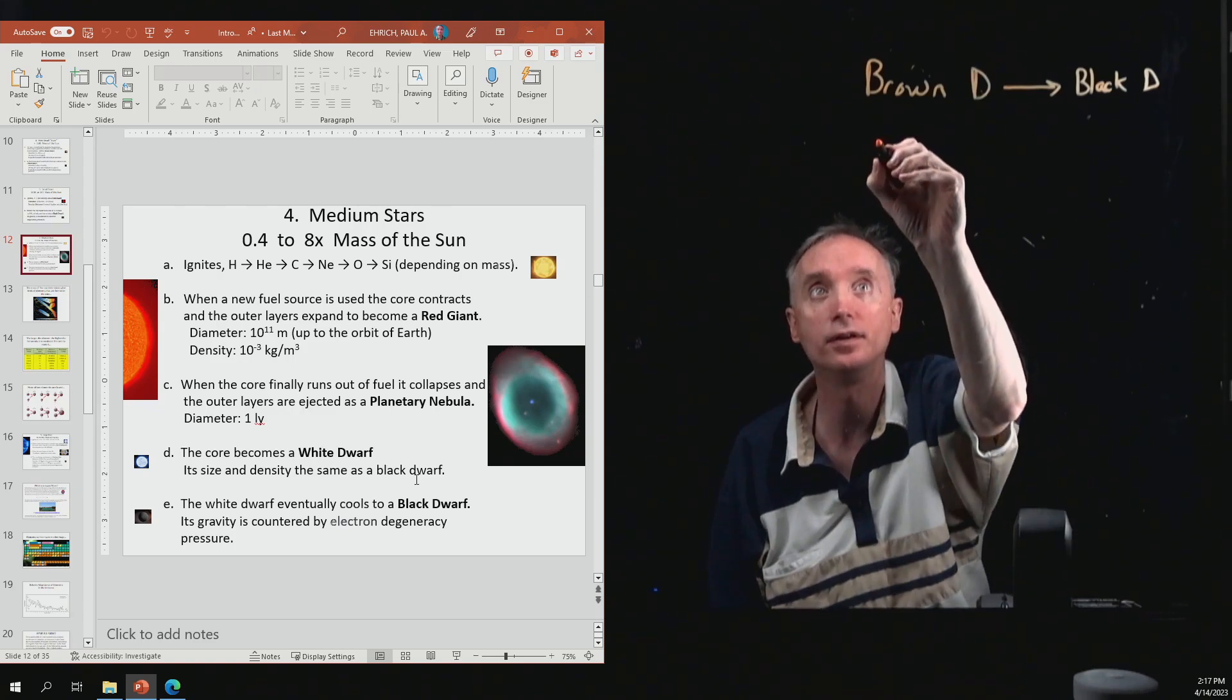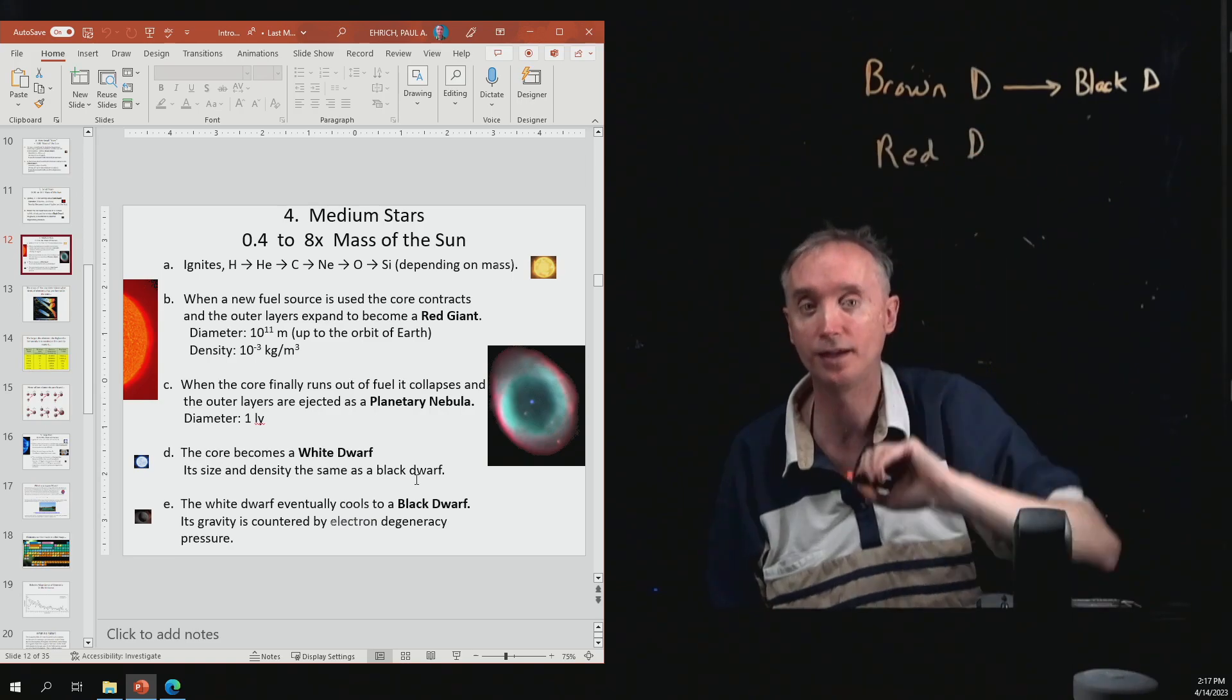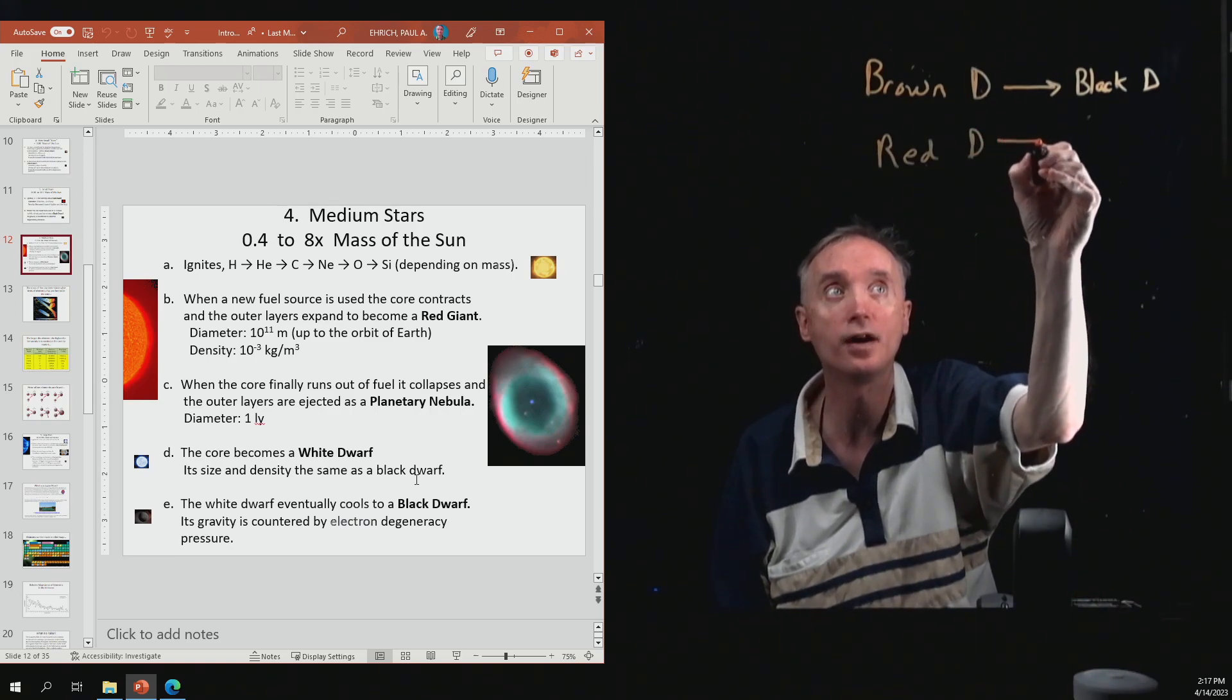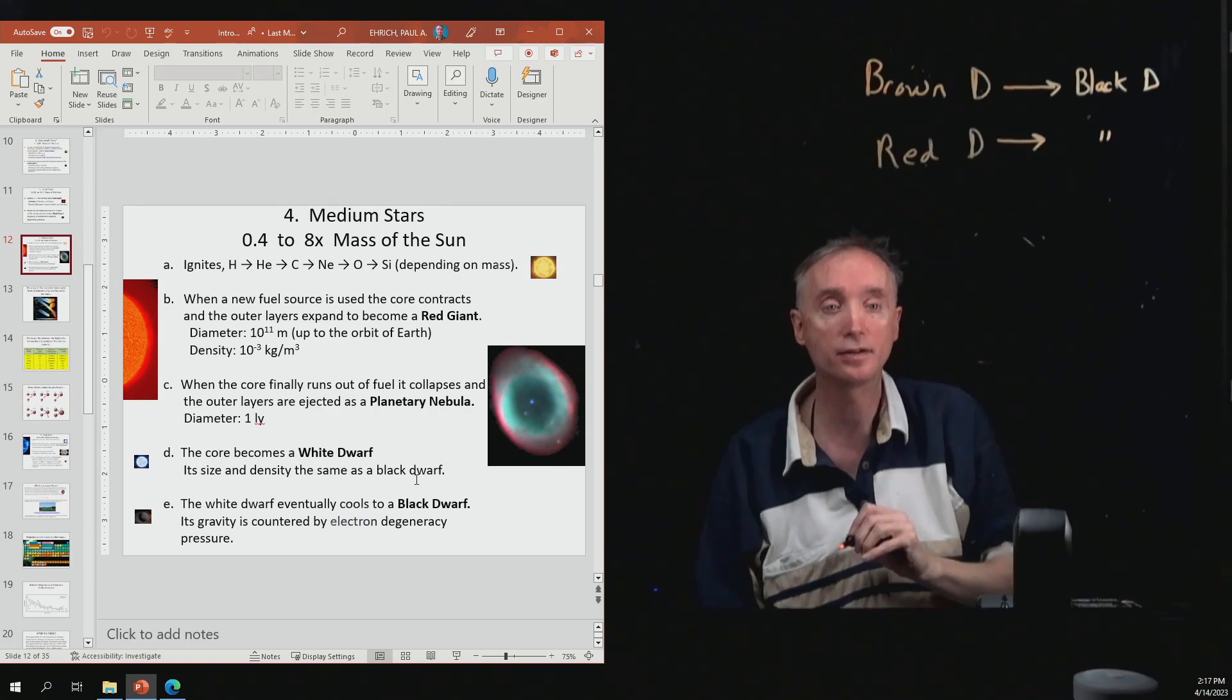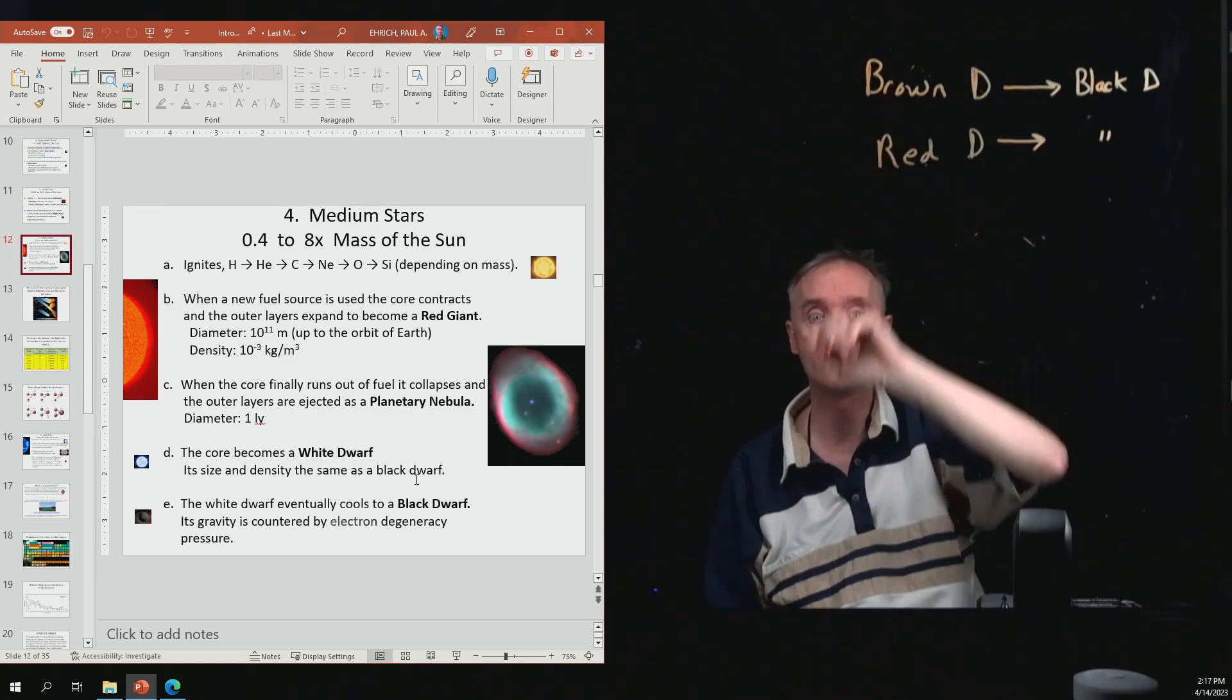Okay, then we had the red dwarf, which did ignite, but eventually it's going to run out of hydrogen and it turns into exactly the same thing that the brown dwarf did.